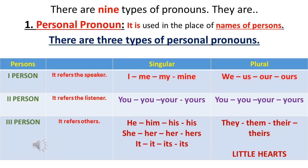If you look at these personal pronouns in both singular and plural forms, each and every pronoun has four forms. The first form can be used in the subject place: I, we, you, he, she, it, they. These are called the subjective case pronouns — they can be used in the subject position.